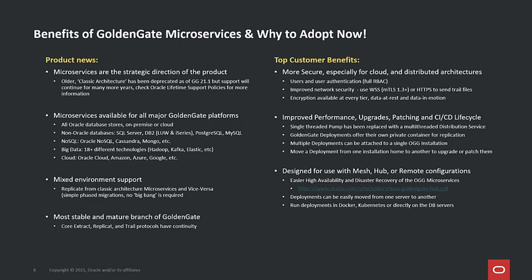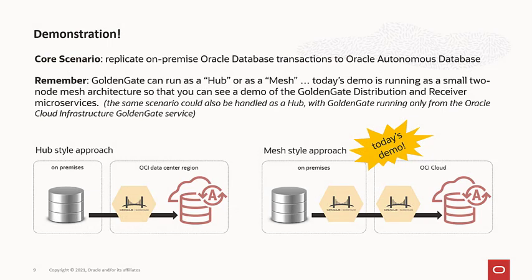GoldenGate microservices allow you to operate GoldenGate as a service mesh or data mesh inside Docker, Kubernetes, or OpenShift. You still have the option to run GoldenGate directly on your database servers if that suits your needs. The microservices support remote configurations — remote capture and remote delivery into pretty much all strategic platforms. The underlying infrastructure gives us a much easier way to provide highly available disaster recovery-based deployment models, and you can move deployments around much easier to support shifting infrastructure requirements.